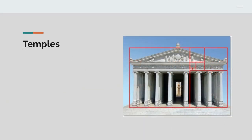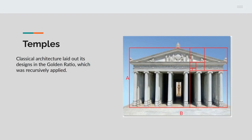Let's take a historical example, look at Greek temples. Classical architecture laid out its designs in the golden ratio, and this applied not just in temples but all sorts of buildings and elements. What is this ratio and why does it use this ratio?